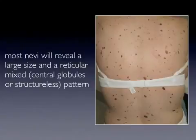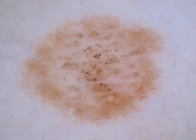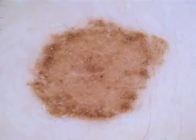On the other hand, most nevi in a person with multiple large nevi will show a large size and a reticular mixed pattern composed of central globules or structureless areas and a peripheral network. Here is one example: central globules surrounded by a network. Another example shows a more structureless brown pattern, but still we can recognize at the periphery a reticular pattern.